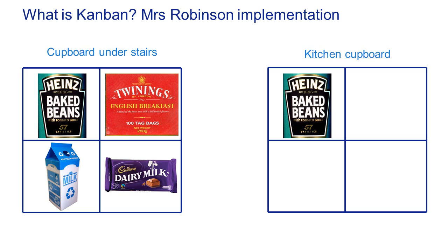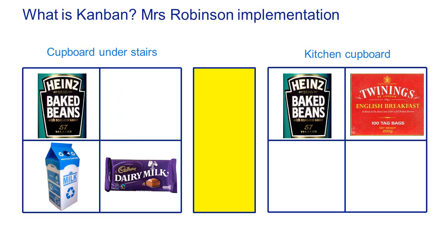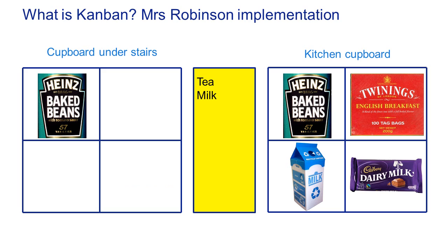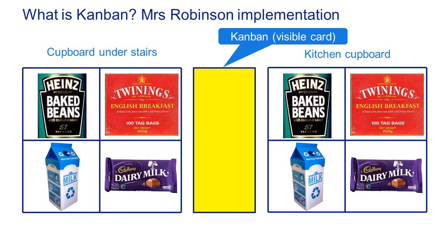That was fine that day, but the next day the kitchen cupboard didn't contain what I wanted. I could go to the cupboard under the stairs where my mum had put a blank piece of paper. I could take the tea and write on that paper 'tea', take the milk and write 'milk', and take the chocolate in the same way. Then once a week she would take that piece of paper to the supermarket to restock. This piece of paper is what we call the Kanban — the visible card that tells us what we need to restock and when.